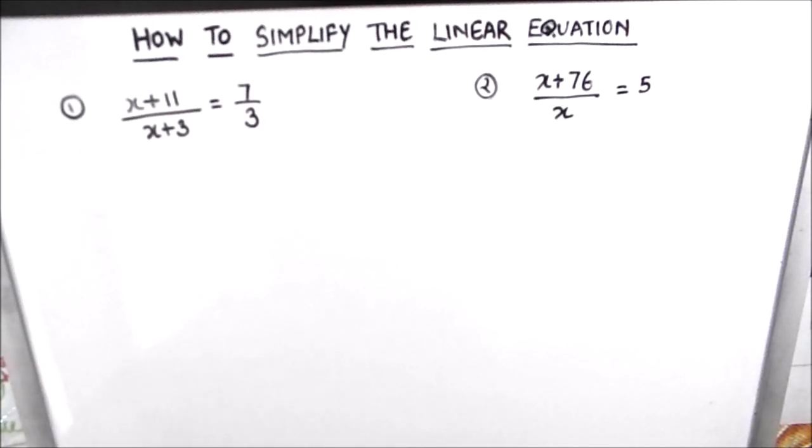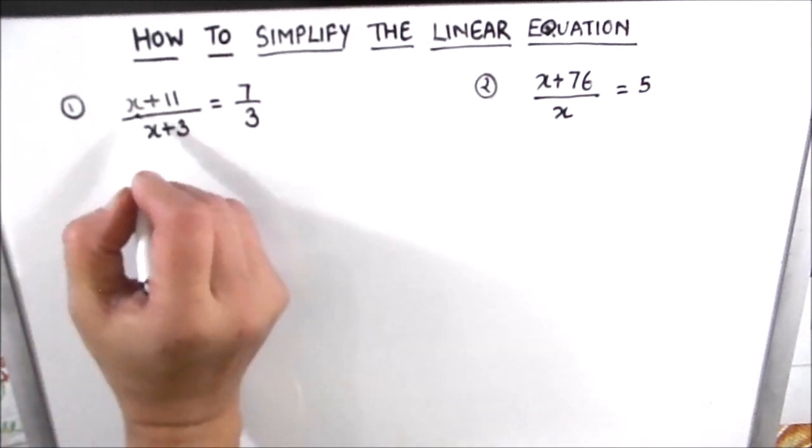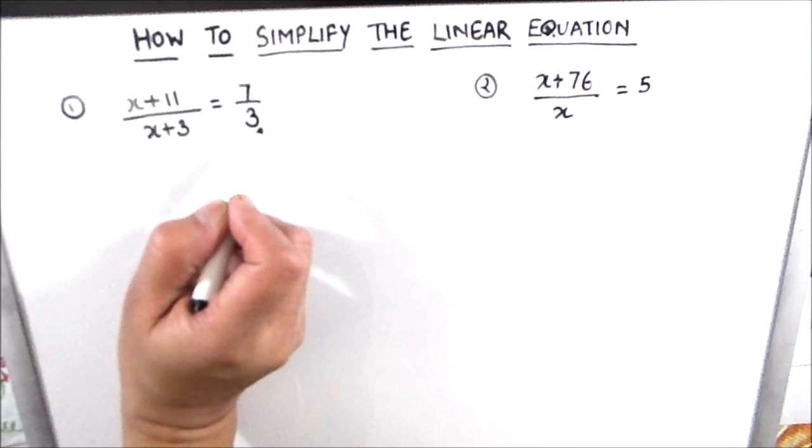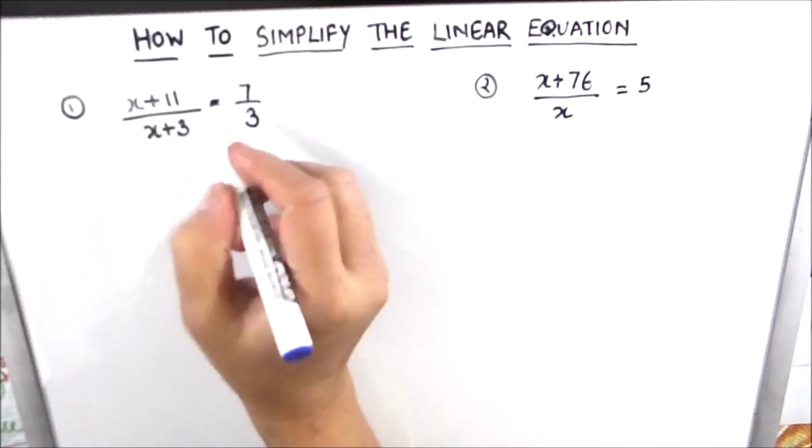Hello students, in this video we are going to learn how to simplify linear equations in single variable. We will be solving two examples in this video, so let's start with our first example. Here we have an equation (x+11)/(x+3) = 7/3.